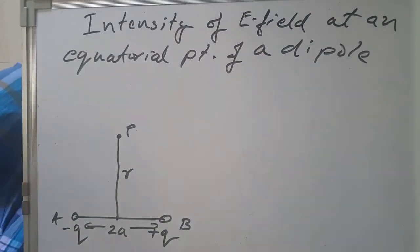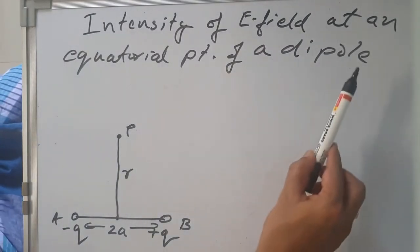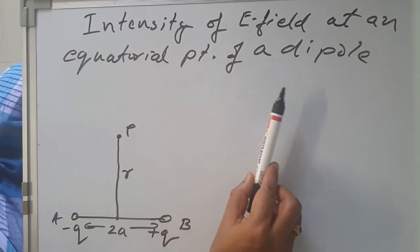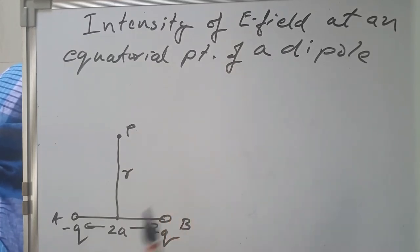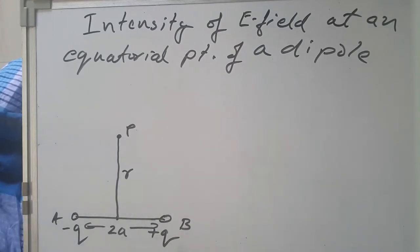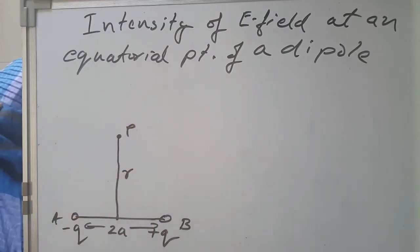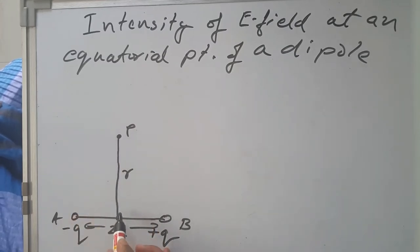Now we will derive an expression for intensity of electric field at an equatorial point of a dipole. Here is the dipole: minus q and plus q, separated by 2a. Equatorial point means a point lying on the perpendicular bisector — this is the equatorial line. Here is the point P lying on the equatorial line at a distance r from the center of the dipole.